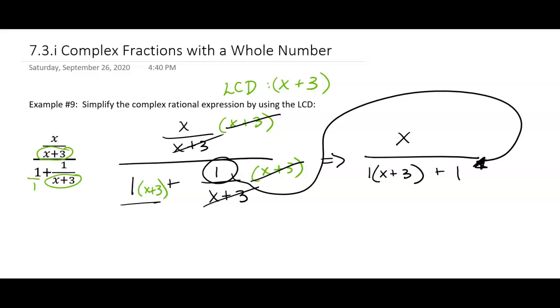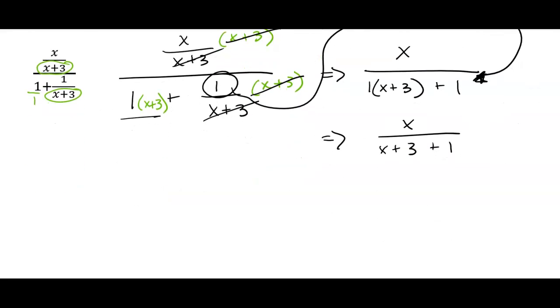All right, so it's simplified pretty nicely. Now we just have x over, I am going to distribute the 1, so x plus 3. You could have just written x plus 3 to begin with, because 1 times x plus 3 is going to be x plus 3. But we have to know that so that we can simplify the denominator. x over x plus 4.